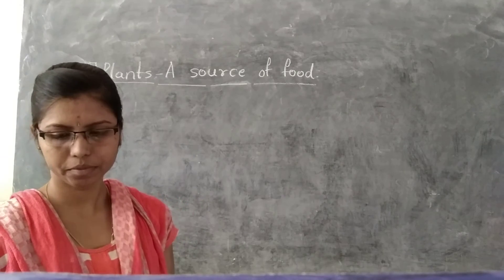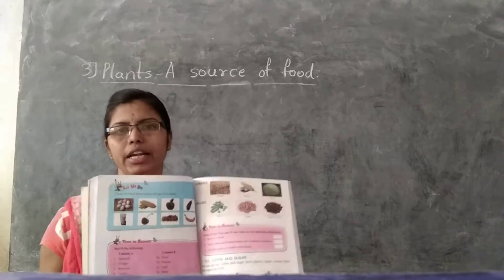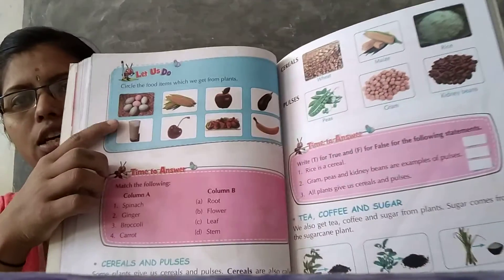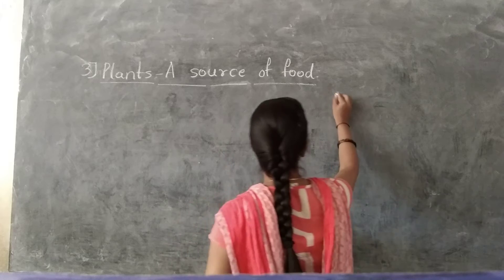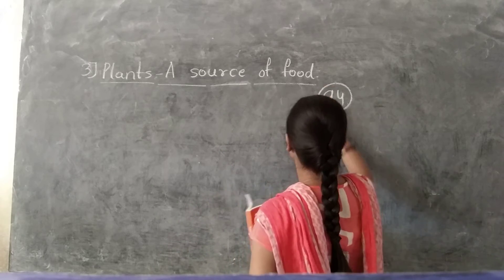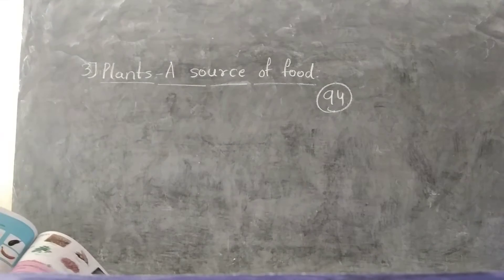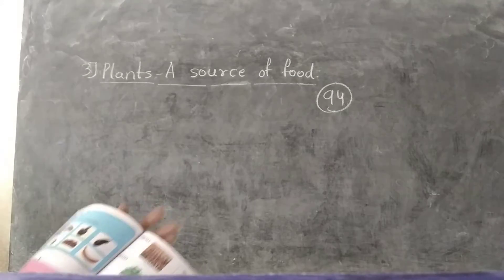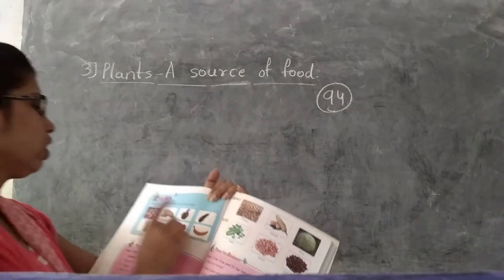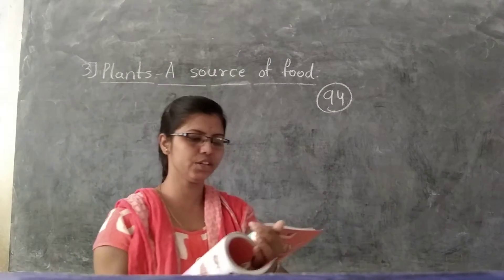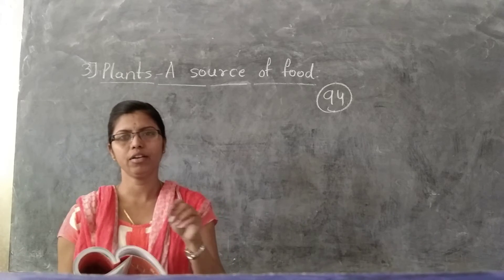Today I am going to deal with page number 94. All of you open page number 94. Let us circle the food items which we get from plants.